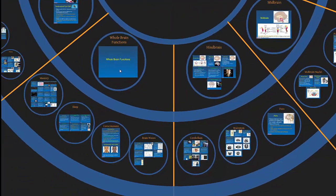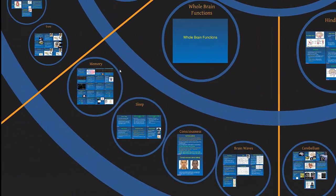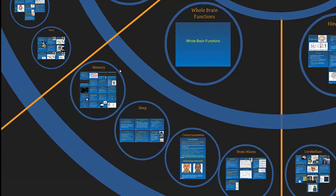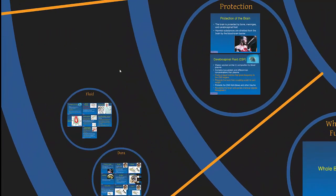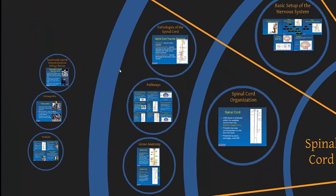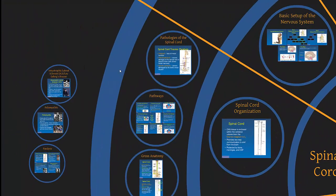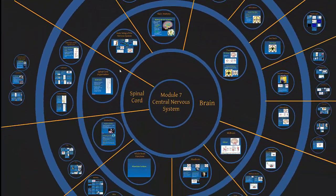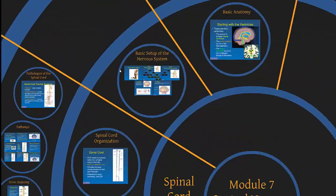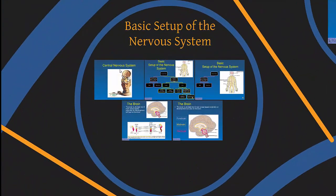Then we have whole brain functions — things like brain waves, consciousness, sleep, and memory. We'll talk about protection: the dura mater, which is the covering of the brain, and the fluid that floats the brain, keeping it protected so that when there's trauma the brain is basically floating. And of course, the spinal cord.